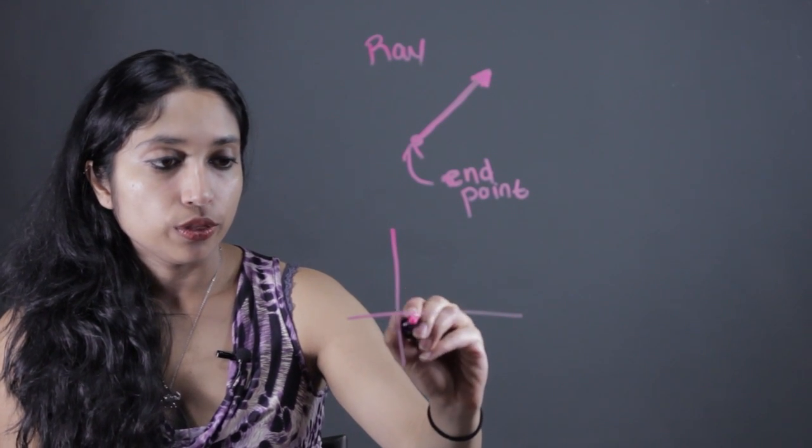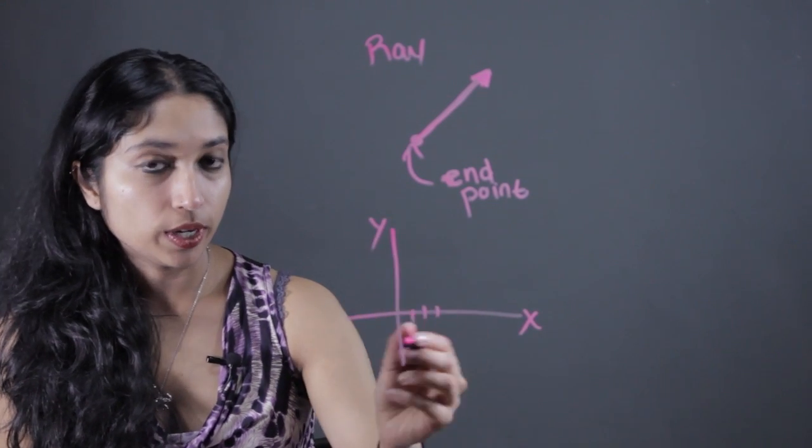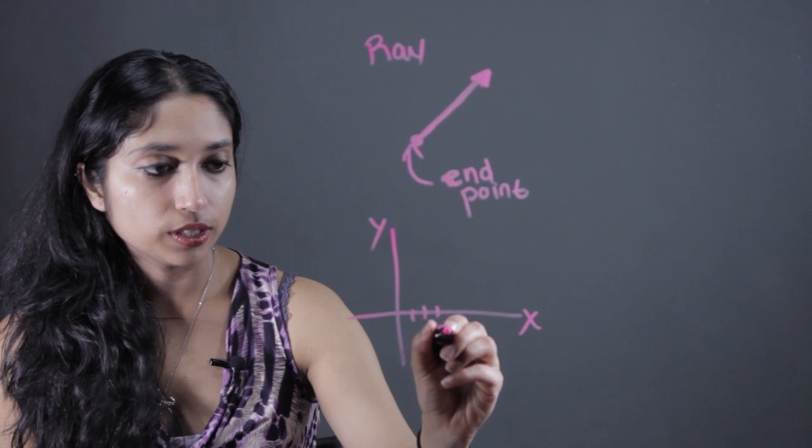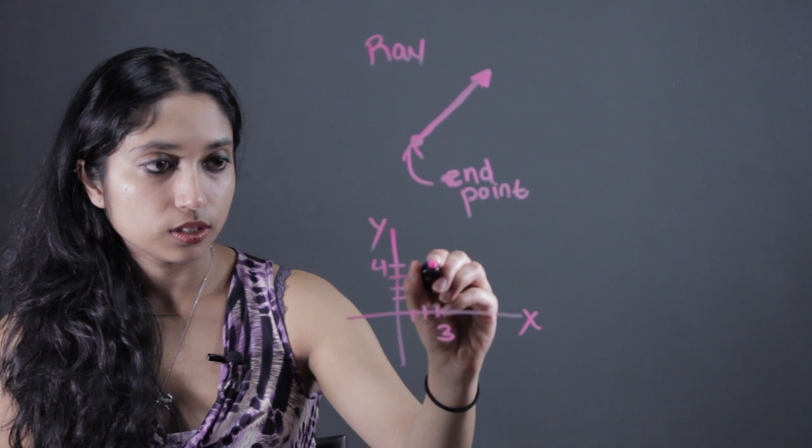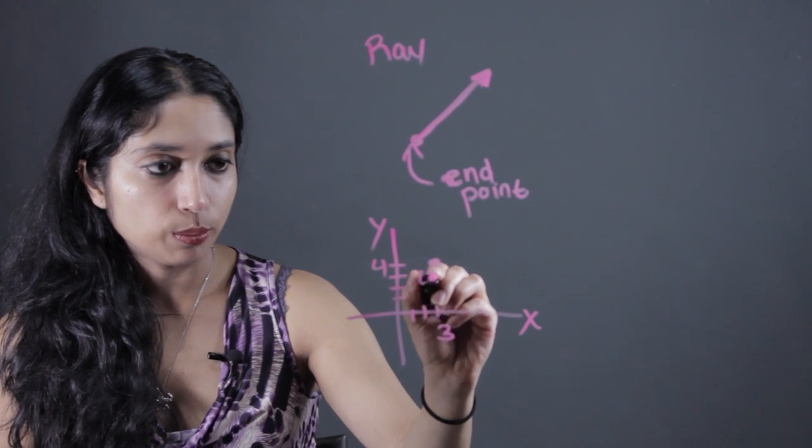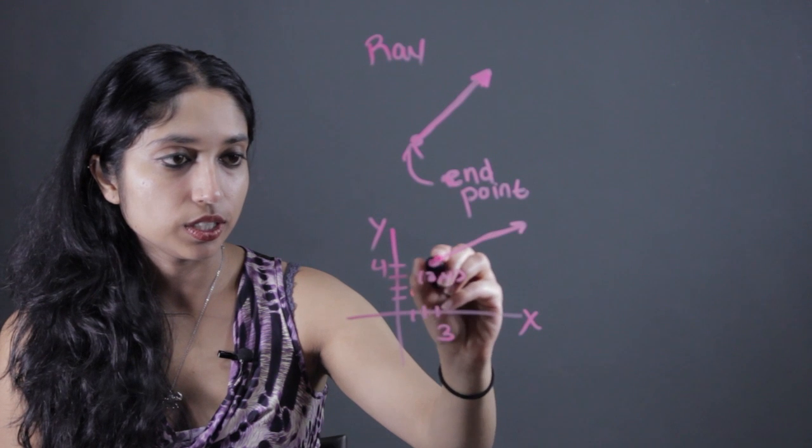starting at the point (3, 4). So you would just go over—and I'm drawing our xy-axes here—you would just go over three units, go up four units, put on that point at (3, 4), extend it infinitely in one direction.